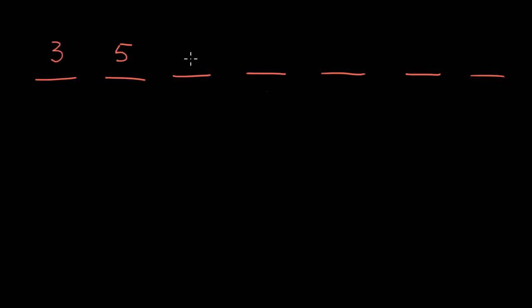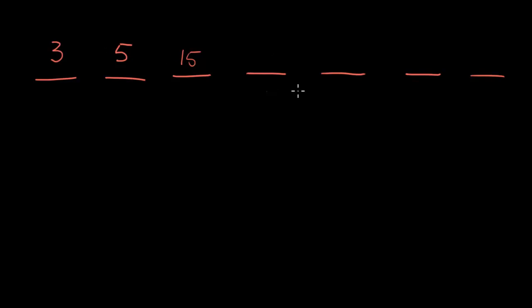So a3 is going to be the product of the two that come before it — 3 times 5, or 15. And a4 is going to be the product of all three of these, so 15 times 5 times 3. And actually we might notice a little pattern here.